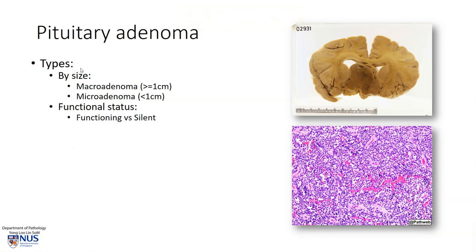Pituitary adenomas can be classified in several ways. For example, you can go by size. Tumours that are 1 cm or more in maximal dimension are known as macroadenomas, and the smaller ones are known as microadenomas. This particular tumour is definitely larger than 1 cm, so this is a macroadenoma.